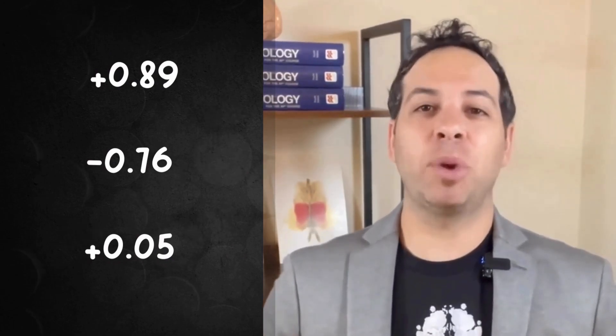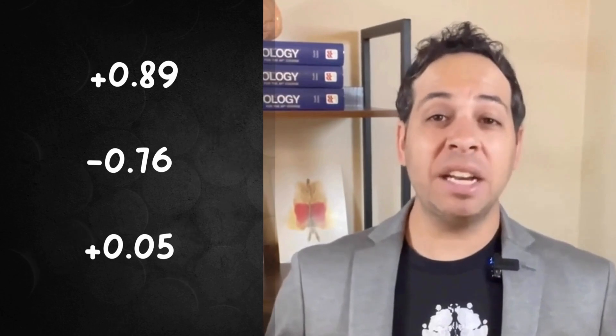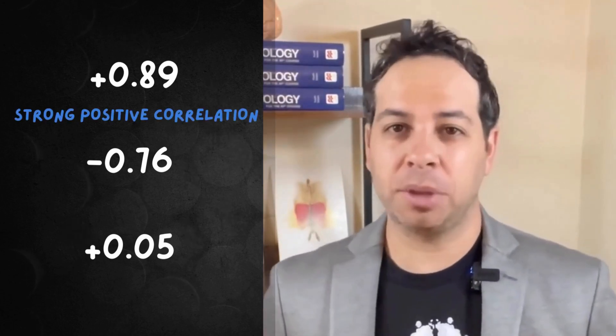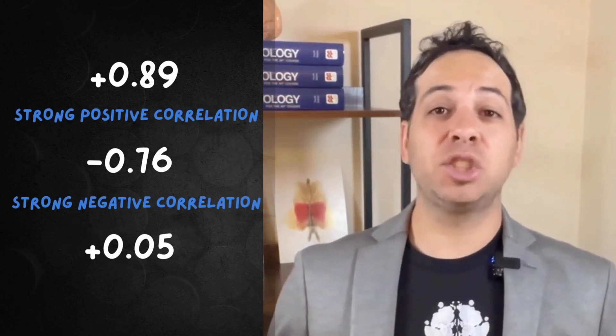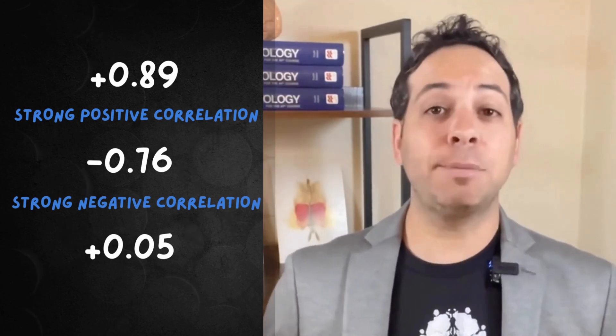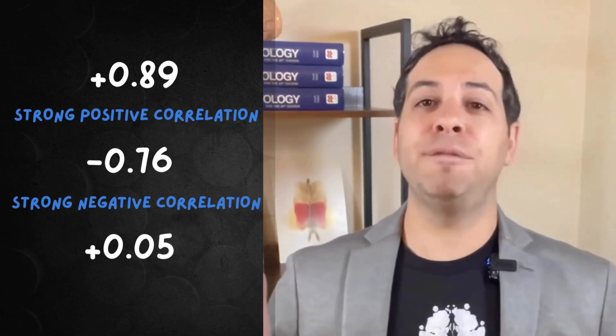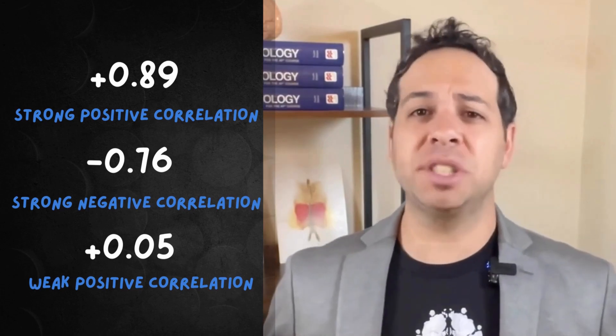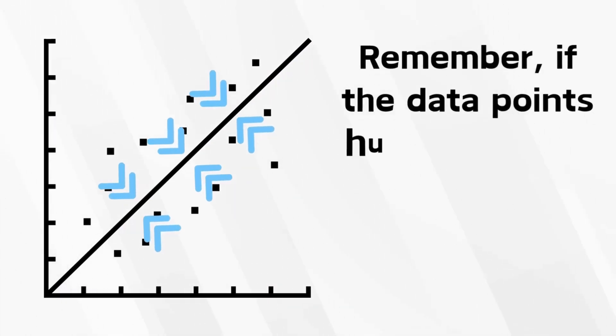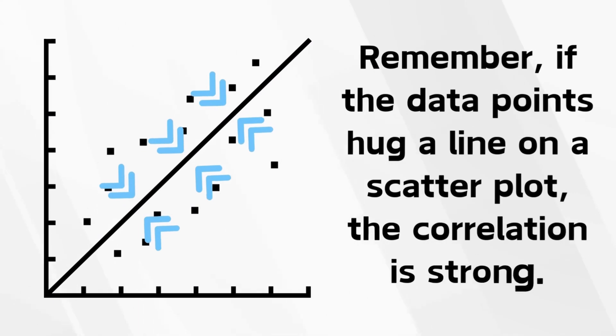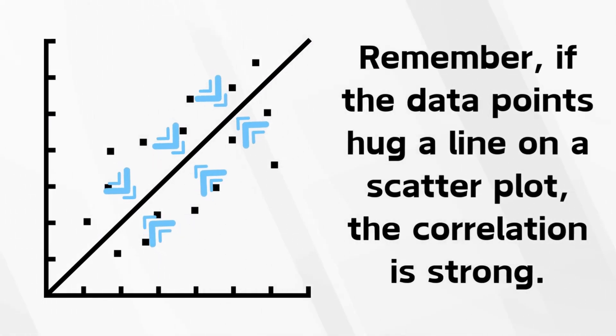Here's the breakdown: positive 0.89 — strong positive relationship. Negative 0.76 — strong negative relationship. Positive 0.05 — very weak, basically strangers in the same room. Remember, if the data points hug a line on a scatterplot, the correlation is strong. Now, while important, a correlational study is not the only non-experimental method psychologists use. There are other ways to observe and describe human behavior, even when you can't run an experiment.